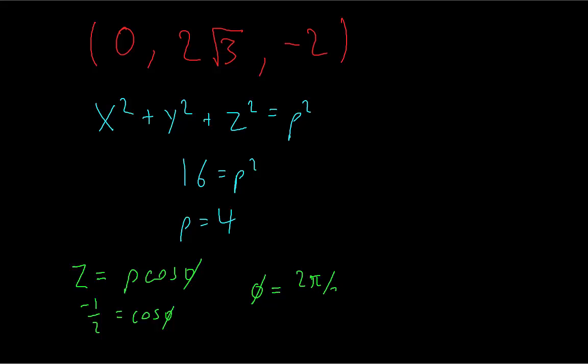So we can find that phi is going to be 2 pi thirds. And then you can use either x or y to find theta. I'm going to use the y coordinate.